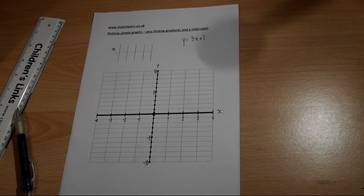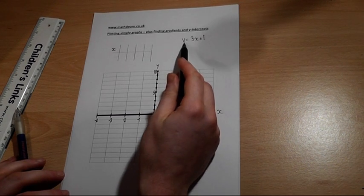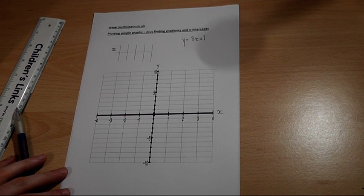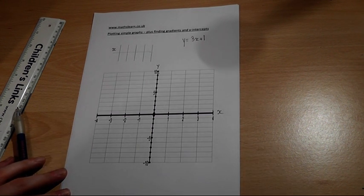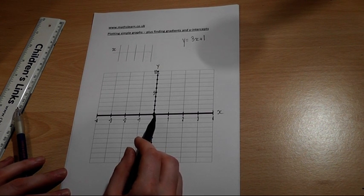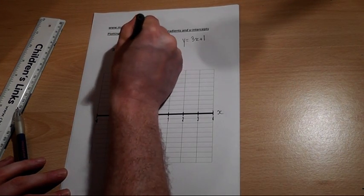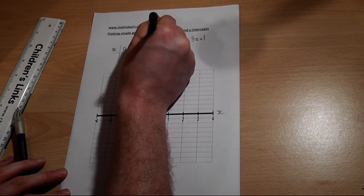Suppose you were asked to plot or sketch the line y equals 3x plus 1. The best way to do this is to pick three or four coordinates on the x-axis, e.g. 0, 1, 2 and 3, which I'll write into the table above.